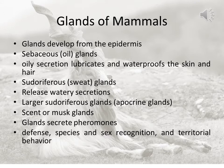Now the glands of mammals. Glands develop from the epidermis. Sebaceous glands are associated with hair follicles and their oily secretion lubricates and waterproofs the skin and hair. Most mammals also possess sudoriferous or sweat glands. Small sweat glands known as eccrine glands release watery secretions used in evaporative cooling. Larger apocrine glands secrete a mixture of salt, urea and water, which microorganisms on the skin convert to odorous products.